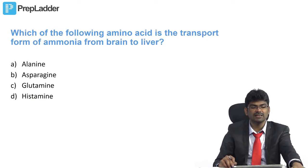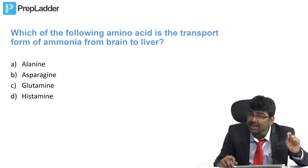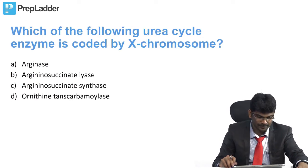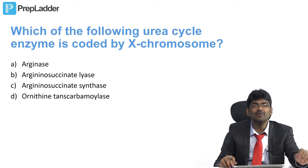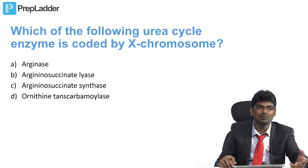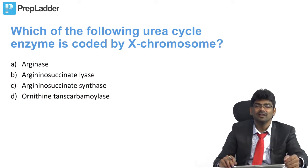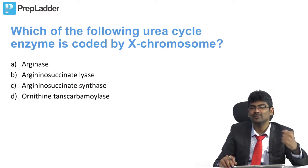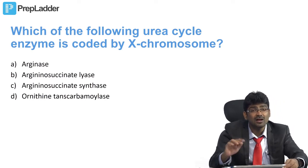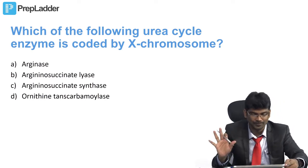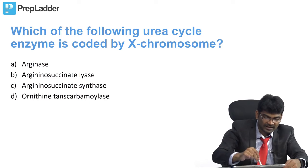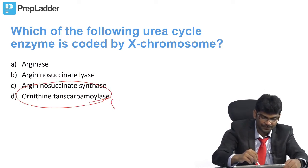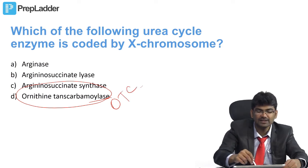Which amino acid is the transport form of ammonia from brain to liver? If the question specifies brain, the answer is glutamine. Which urea cycle enzyme is coded by the X chromosome? That is ornithine transcarbamylase (OTC). Hyperammonemia type 2 is due to a defect in ornithine transcarbamylase, and OTC defect is X-linked.